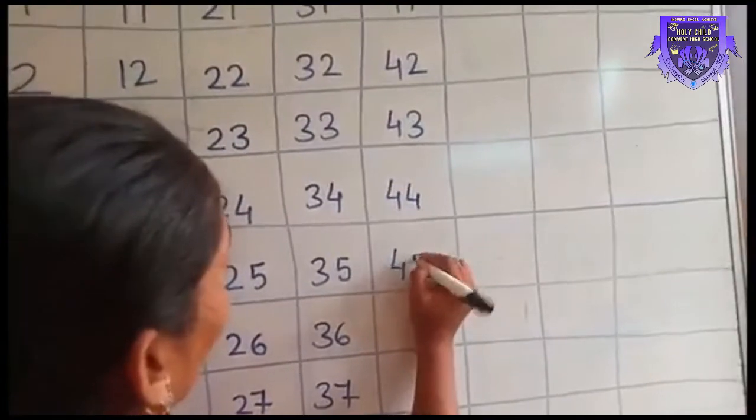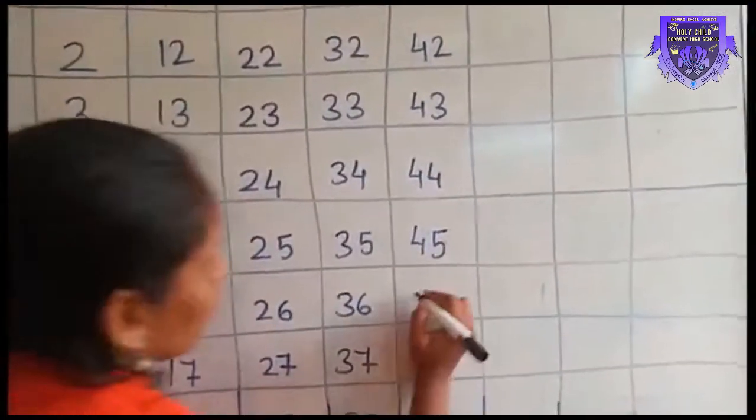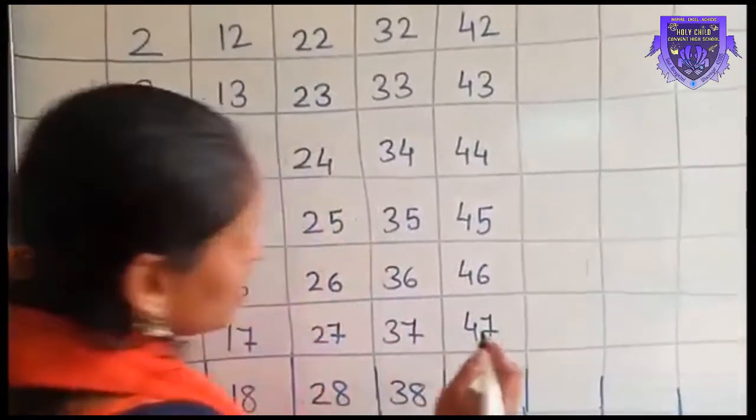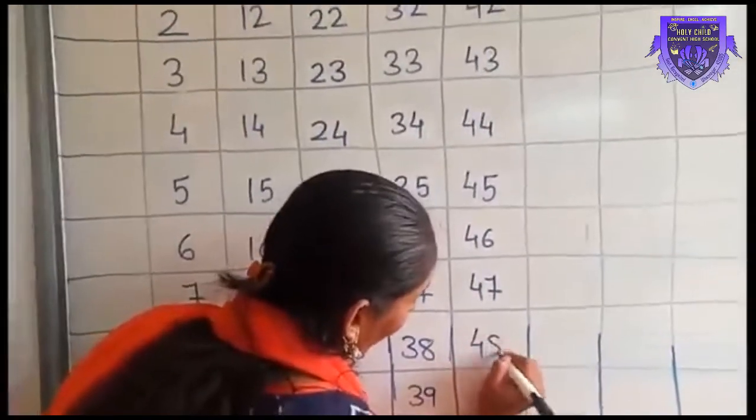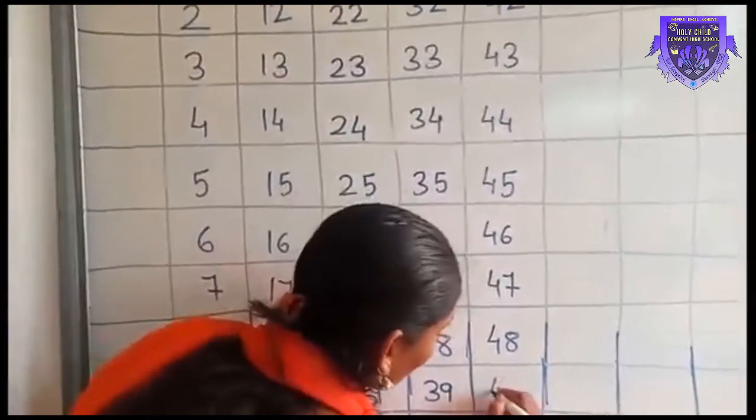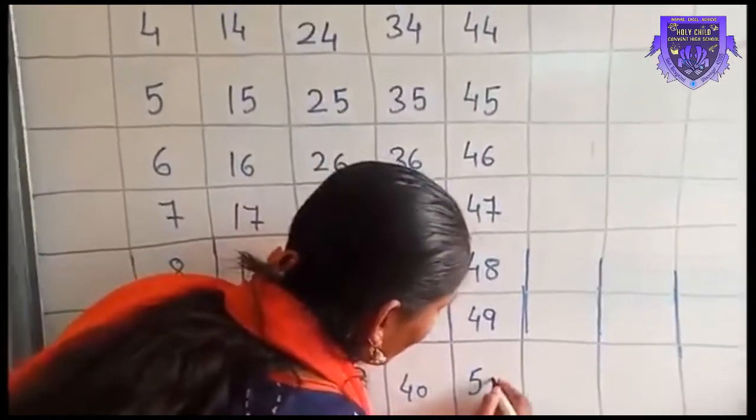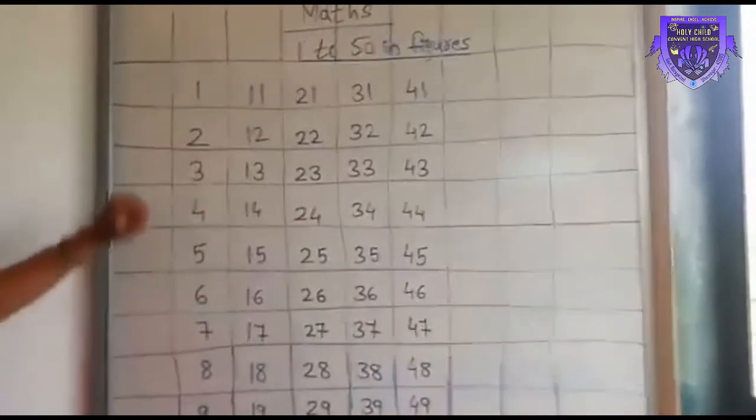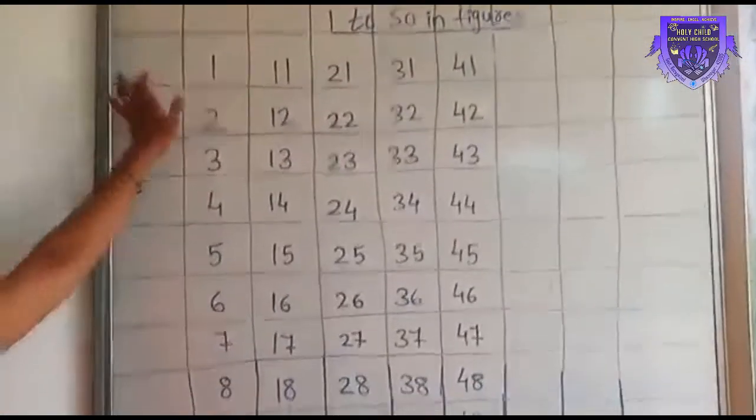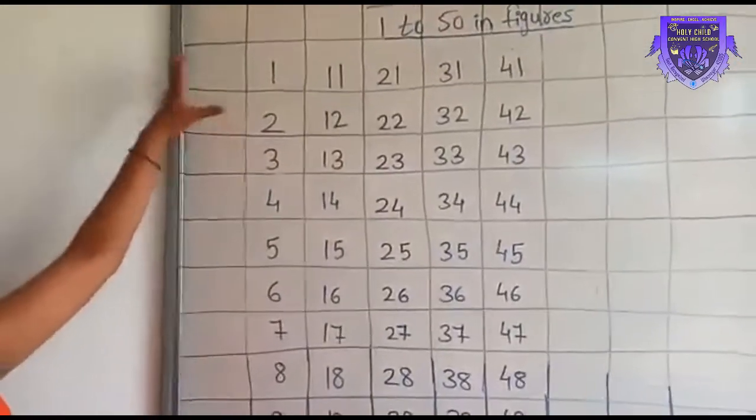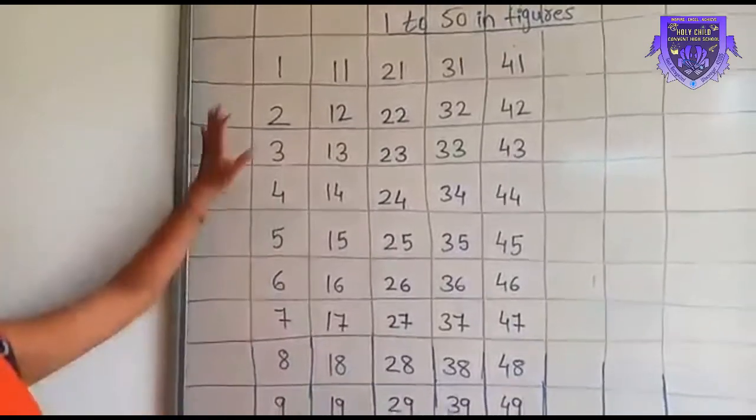41, 42, 43, 44, 45, 46, 47, 48, 49, 50. So students, I hope you have understood how to write 1 to 50 in figures in a square line notebook. You have to write the same in your notebook for 2 times.